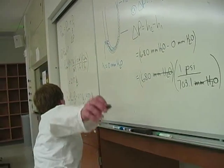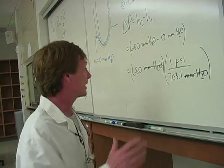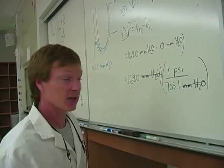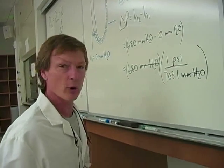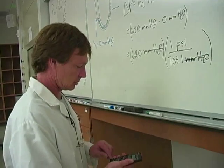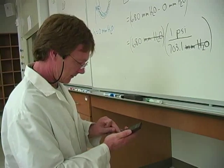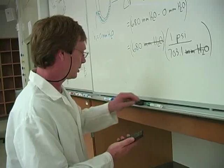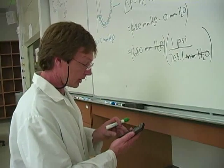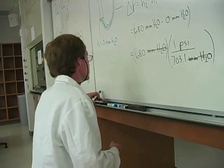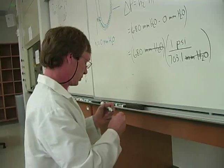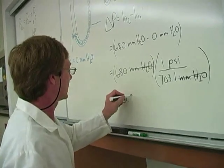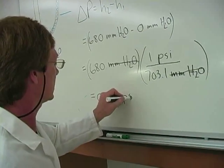So if I do the calculation, first, before I do the calculation, I look at the values. 680 is a little smaller than 703. It's going to be less than a PSI, maybe like 0.97 PSI. So I say 680 and divide it by 703.1, and I get 0.967. So as well as I measured it to two significant figures, I get this is equal to 0.97 PSI.